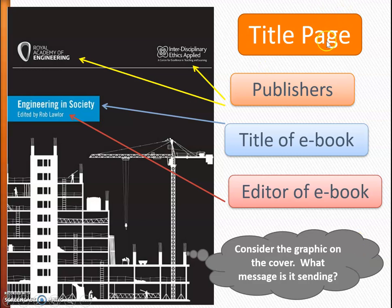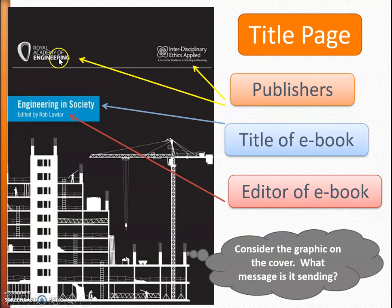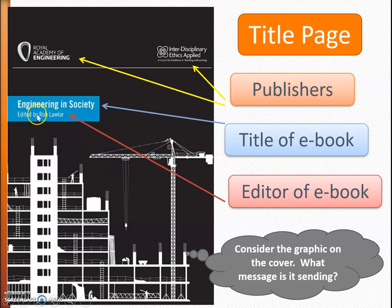The first thing we need to do is look at what we call the title page. There's lots of information there. We have the publishers, and here we have two: the Interdisciplinary Ethics Applied and the Royal Academy of Engineering. So we have two publishers that we need to pay attention to. We also have to look at the title of the e-book, and here we have the title: Engineering in Society. And we see it's not the author, but the editor. And when we see that there's an editor, it tells us that it's a collection of articles — this person didn't write them all, but rather collected them and put them together in a book.